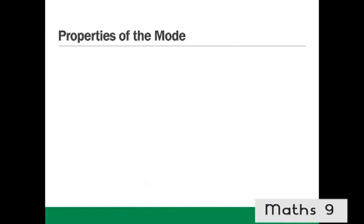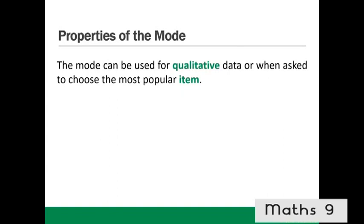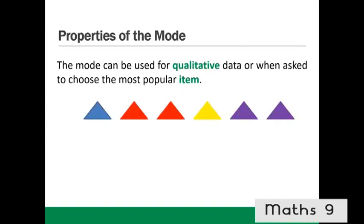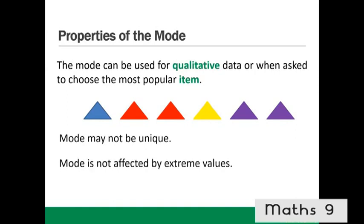Properties of the mode. The mode can be used for qualitative data or when asked to choose the most popular item — for example, finding the most popular colour among triangles. The mode may not be unique (e.g. two red and two purple). The mode is not affected by extreme values; in a dataset where the mode is 6, it is unaffected by an extreme value of 91.